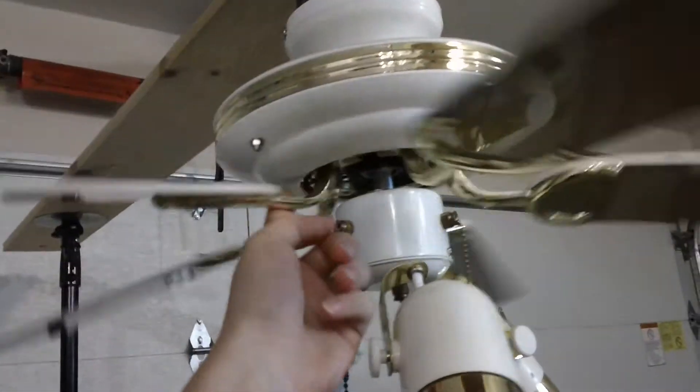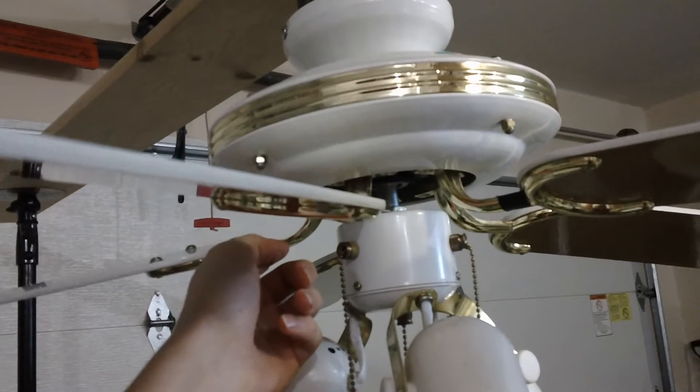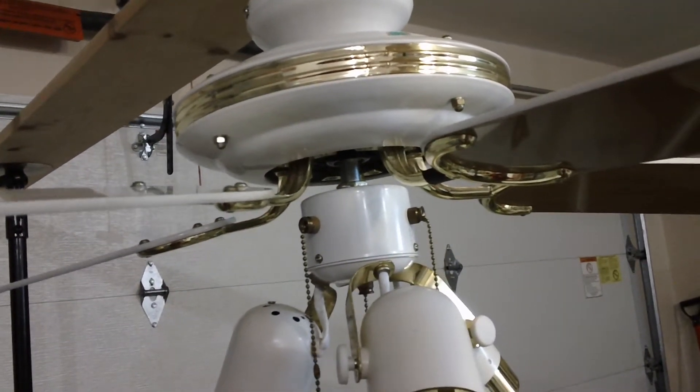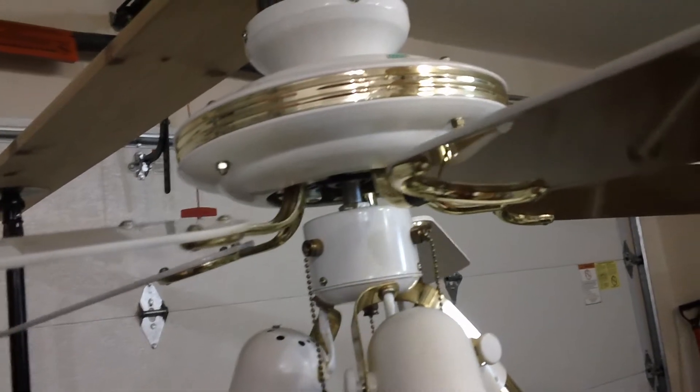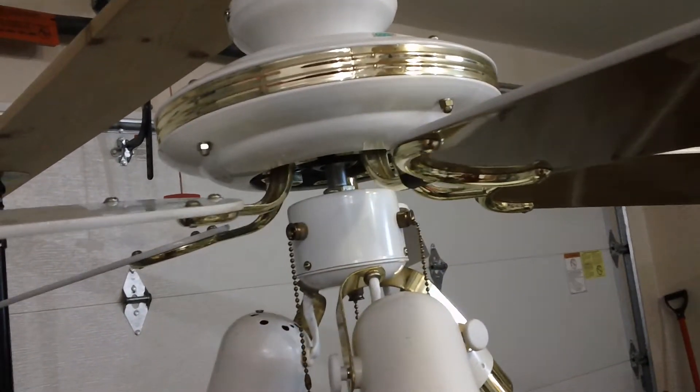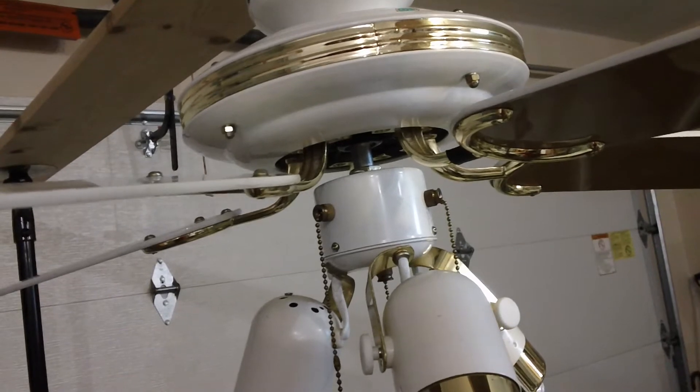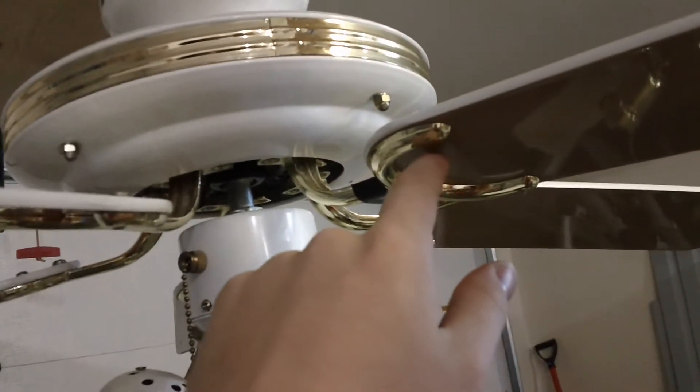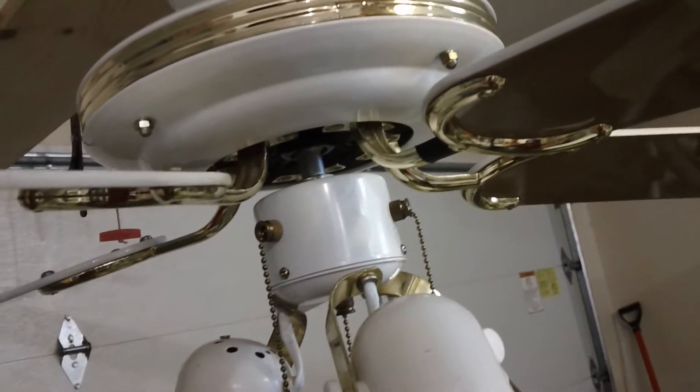And now I'm going to talk about some general information on this. It did actually originally come with the white side of the blades facing down. However, I decided to flip it to this bleached oak. I generally don't like bleached oak on white and polished brass fans, but I just decided to try it on this one. And it actually turned out really good, I think, because of the glossiness of it. I think it actually looks quite nice.